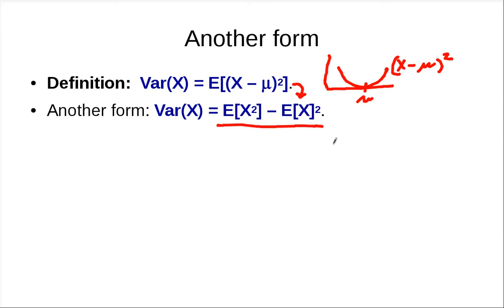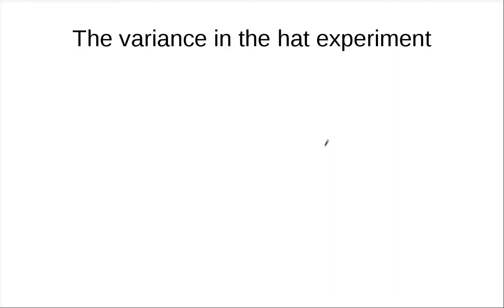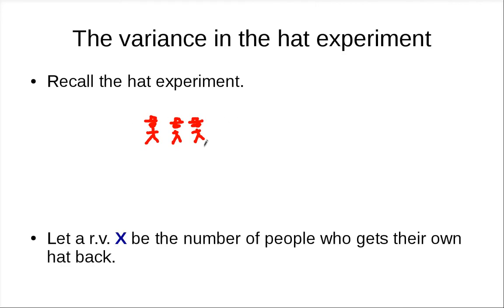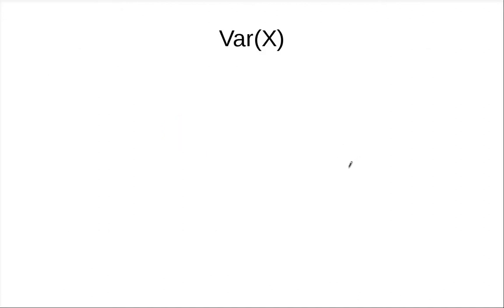We'll show how to compute the variance of the hats experiment. Recall the hats experiment: you have N people, they have hats, you put the hats at the checkpoint, and then everyone gets a hat back randomly. We define the random variable X to be the number of people who get their own hat back. We have already computed that the expected value of X is 1, and now we would like to compute the variance of X.